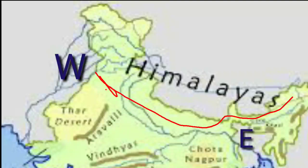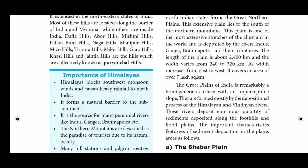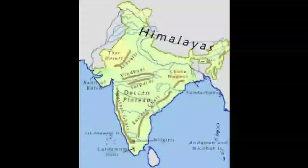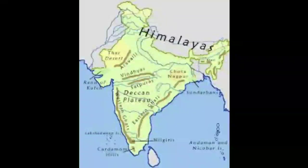The Great Plains of India has a remarkably homogeneous surface — that means it is the same from the beginning. They are formed mostly by the deposition process of Himalayan and Vindhyan rivers. These rivers deposited enormous quantities of sediments along the foothills and footplains. The important characteristic features of the sediment deposition in the plains are as follows.